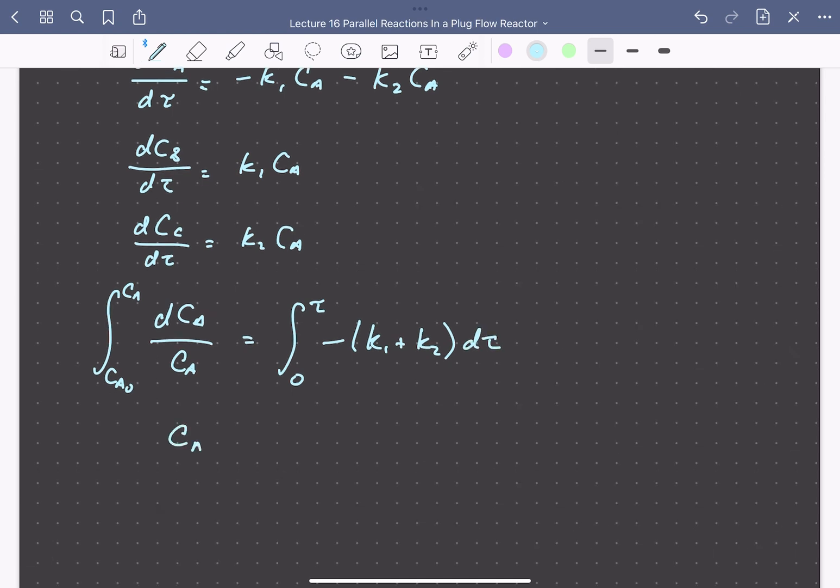The concentration profile for A is CA equals CA0 times e to the minus (K1 plus K2) times τ.